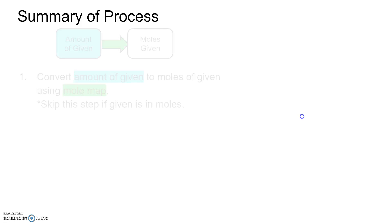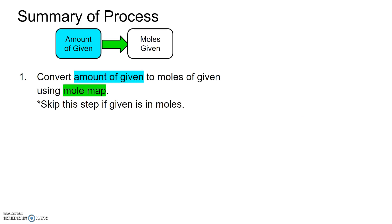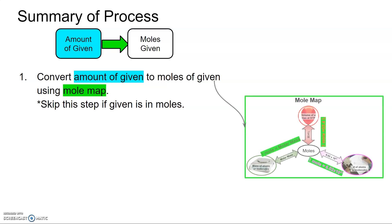So, summary of process. Remember, for these problems the first thing you're going to do is identify your given and find. And then once you've done that, you'll start by converting from the amount of given to moles of given using the mole map. Now remember, you would skip this step if your given is in moles.